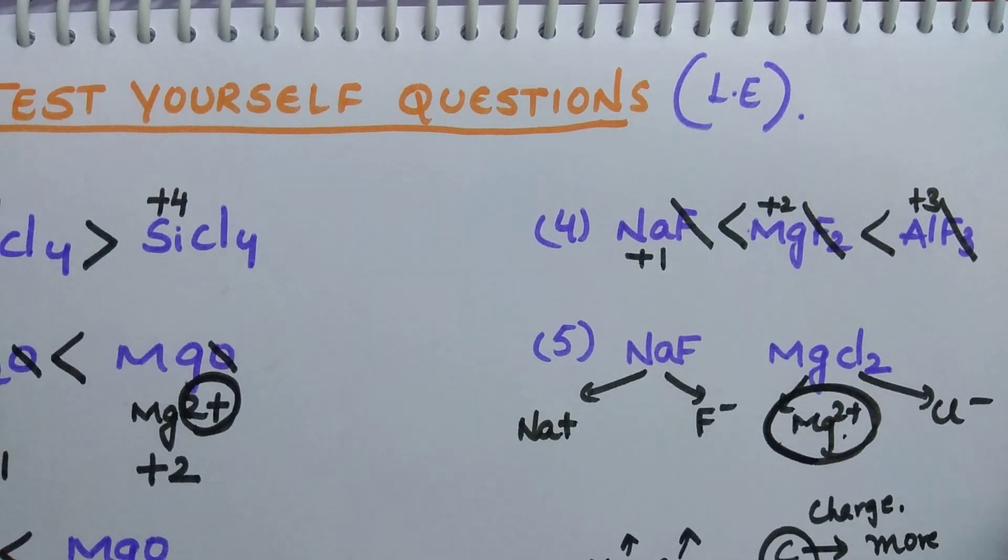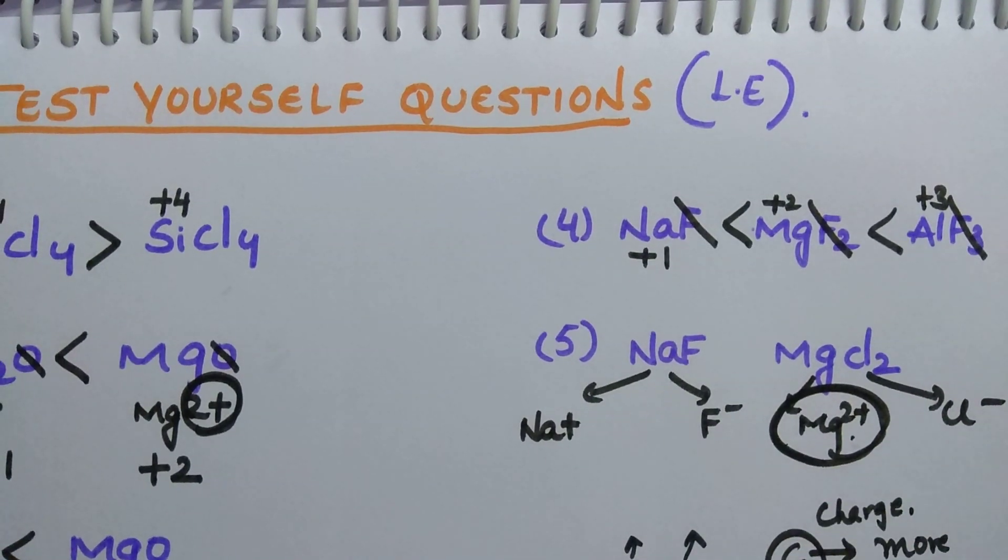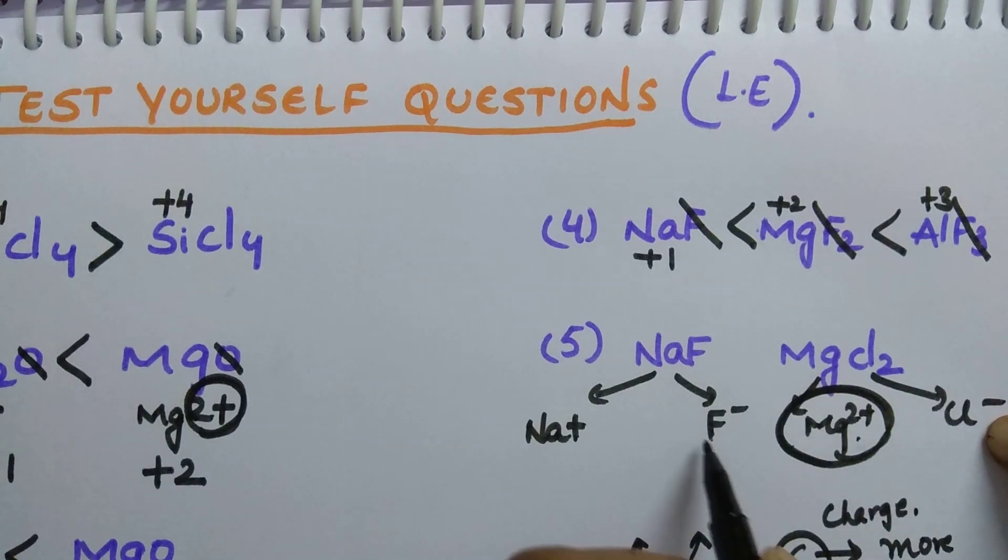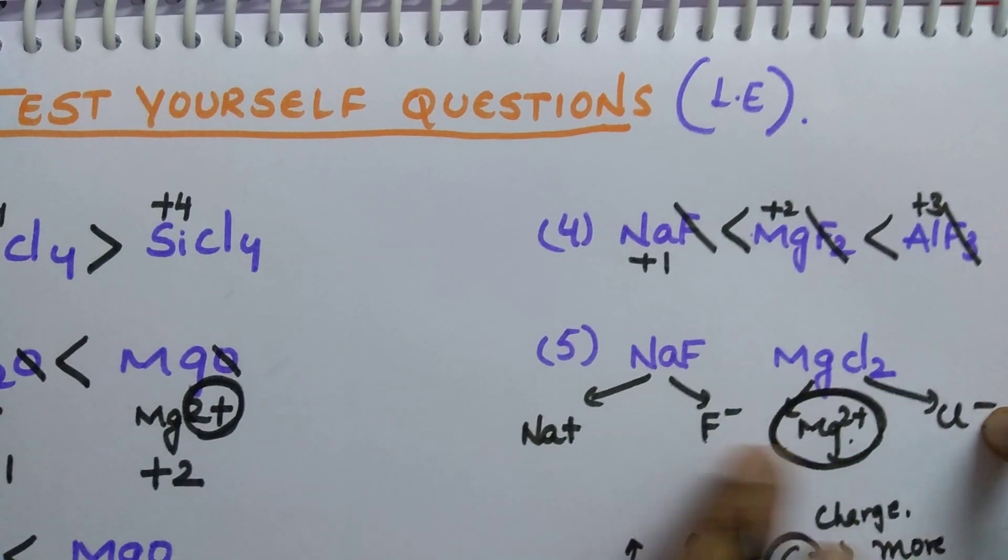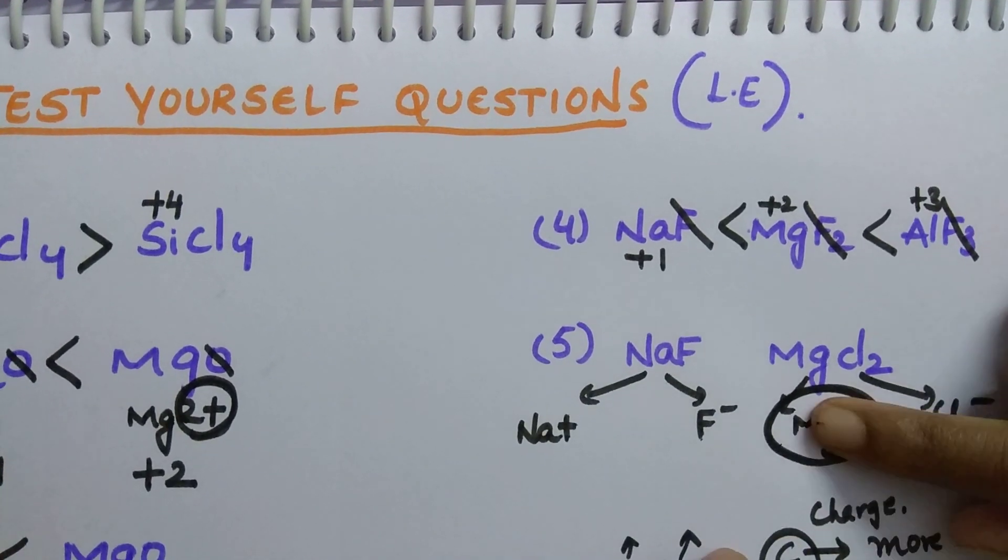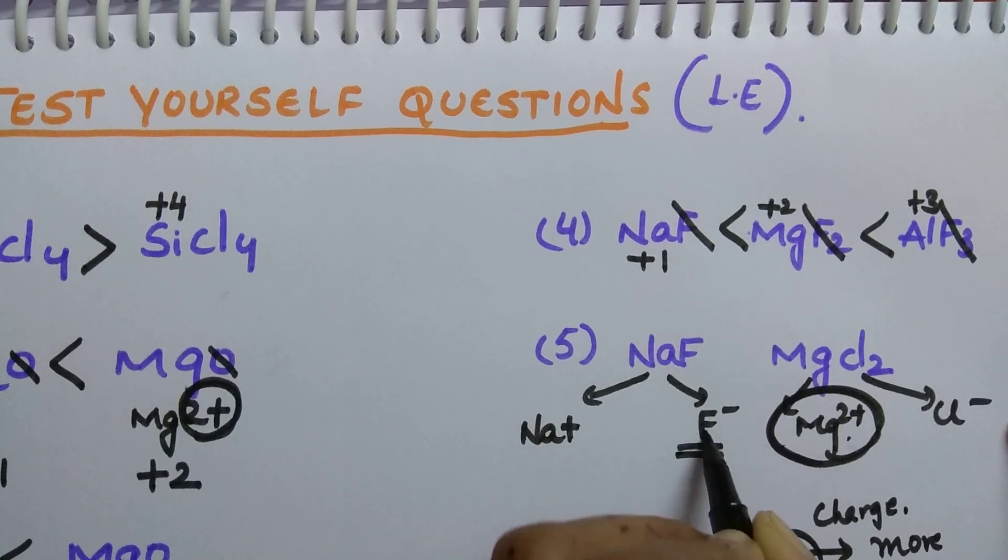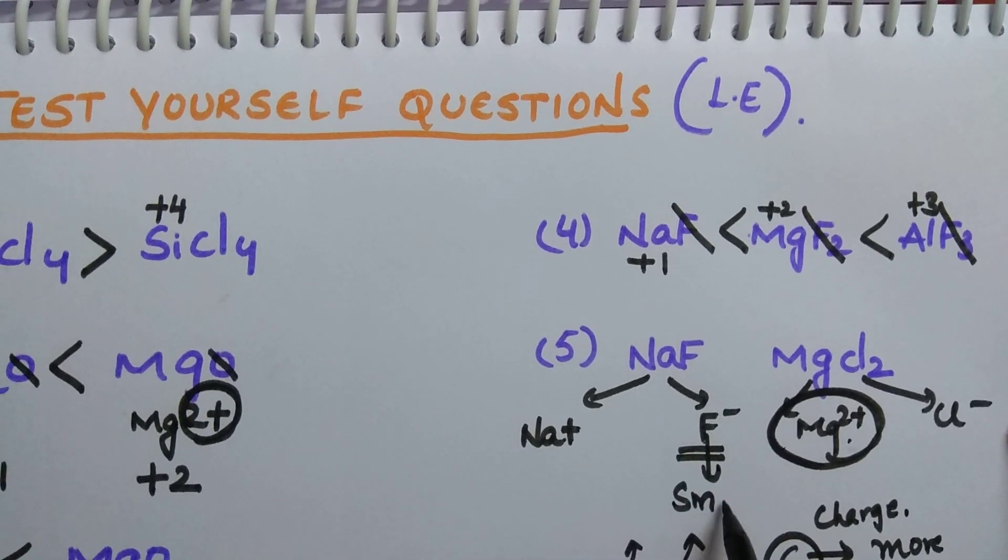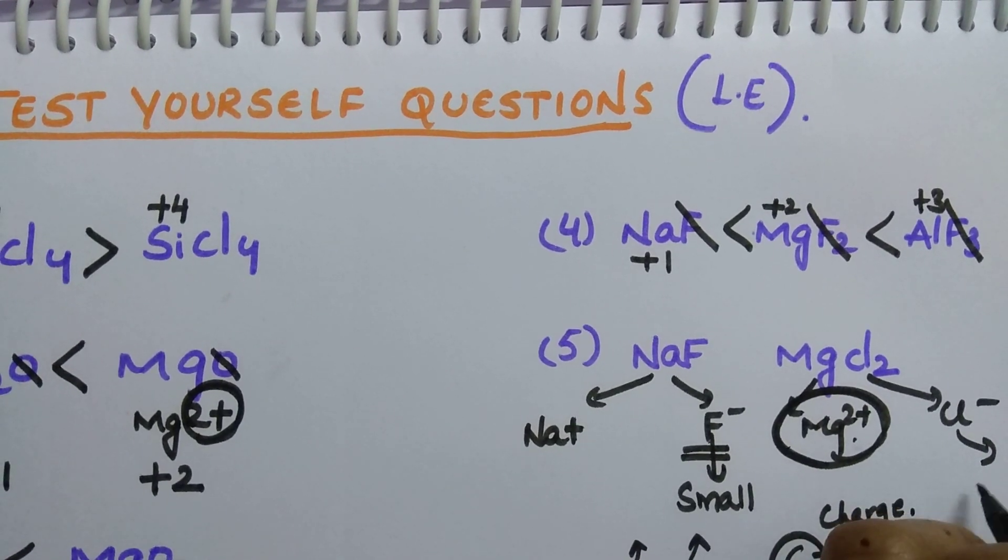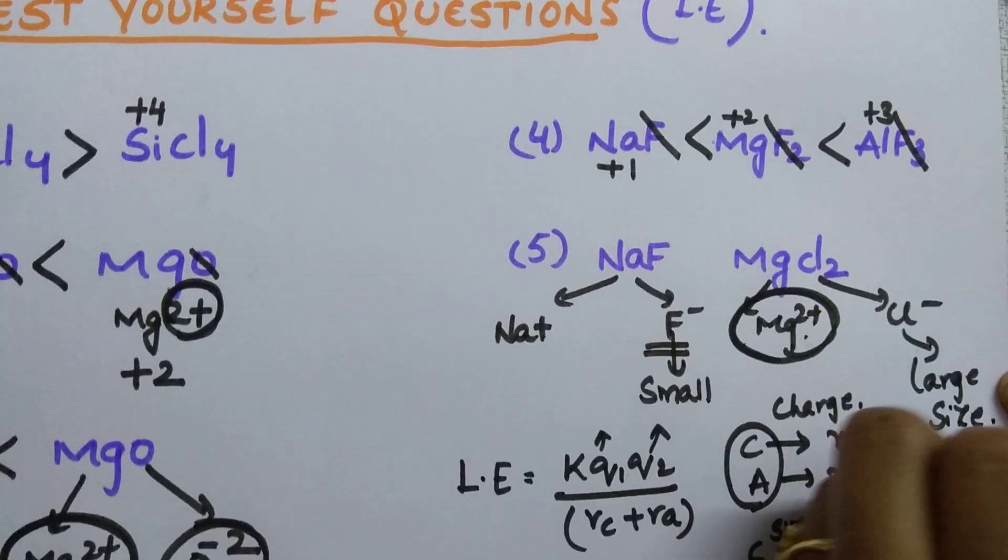In these two, if you observe here, charge is same. So you have to see based on the size. What you have to see? Based on the size. Whenever you see based on the size, what happens is, this is F minus which is having a smaller size. And this is having Cl minus which is having larger size.